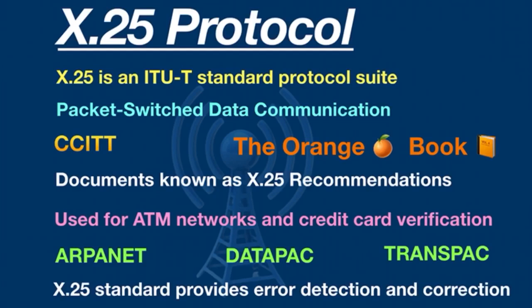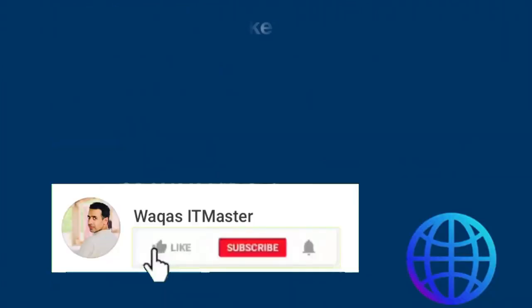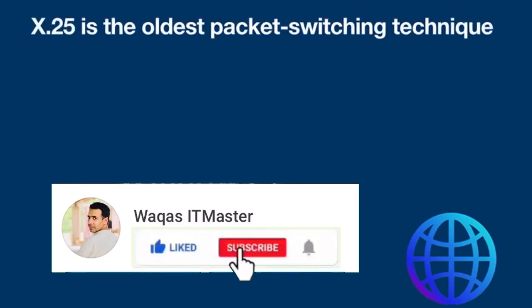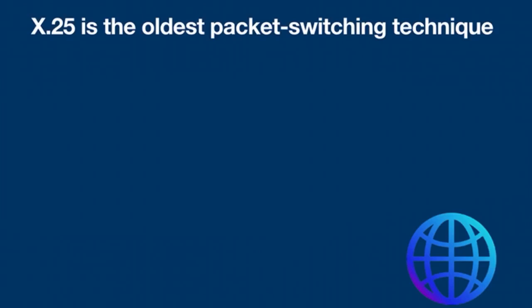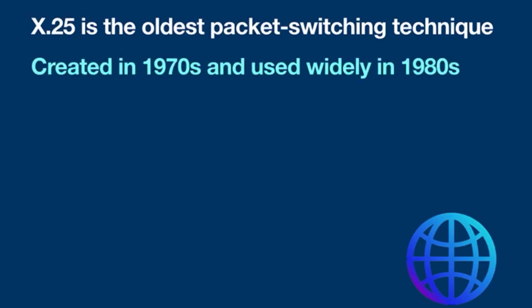X.25 had the original purpose of carrying voice signals over analog telephone lines. It is the oldest packet-switching technique available and was commonly used before the OSI model, created in the 1970s and used widely in the 1980s. X.25 has since fallen out of favor, having been replaced by less complex protocols such as Internet Protocol.